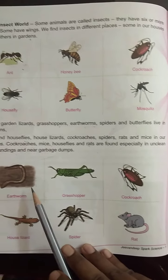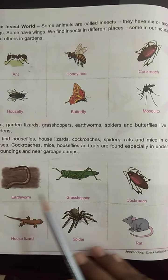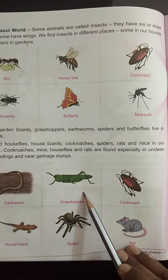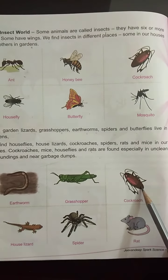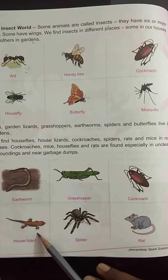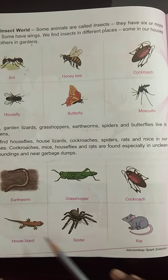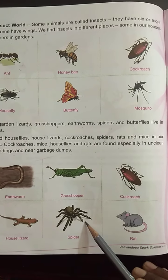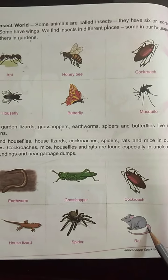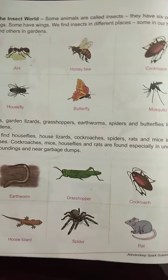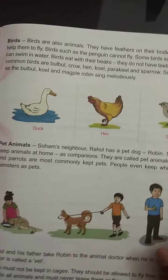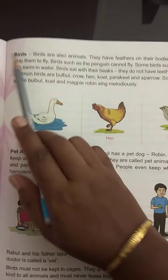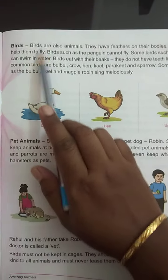Even insects are found in our houses — Earthworm, Grasshopper, Cockroach, House Lizard, Spider, and Rat. Now, moving on to the next part, that is birds.